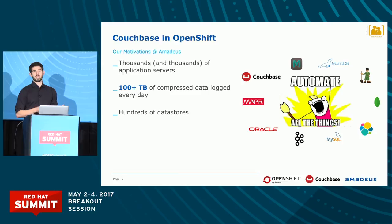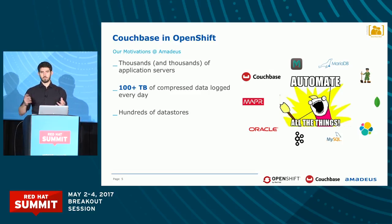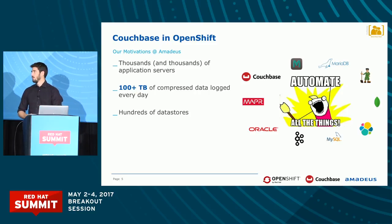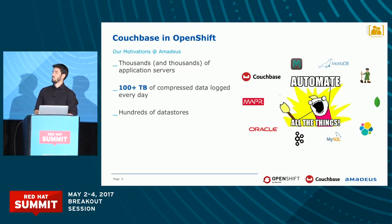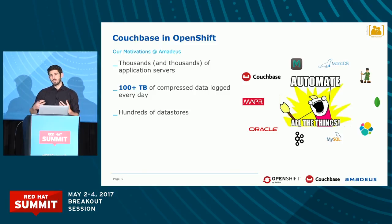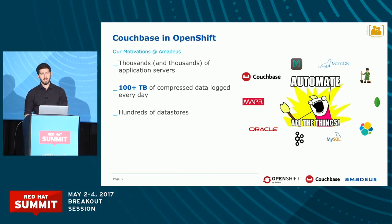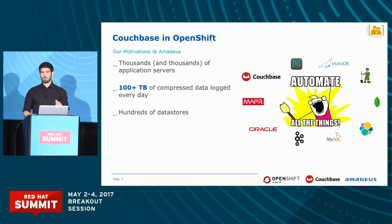For our applications, the solution we picked is OpenShift — we want to deploy all our applications in OpenShift. But for our data stores, we were not really sure what we wanted to do. We're still relying on homemade scripts that we had to maintain to do upgrades and deploy our data stores. We wanted to be more efficient in deploying these data stores.